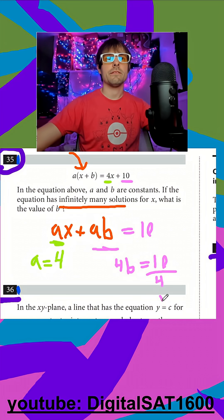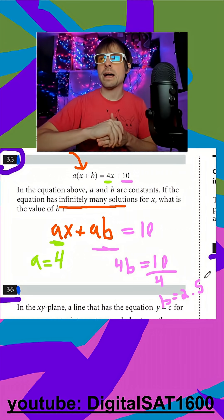Divide this by 4, and for b you should get 2.5. So really, not too bad there.